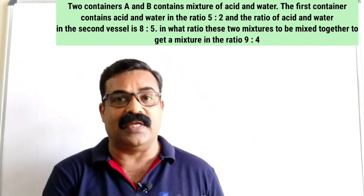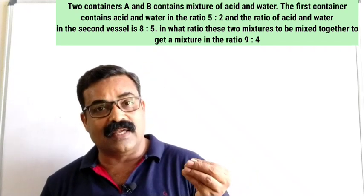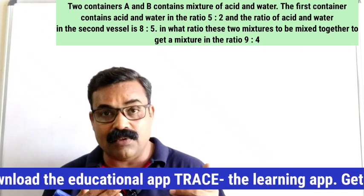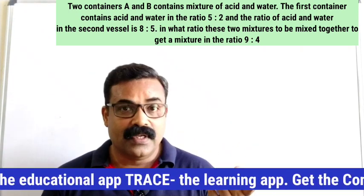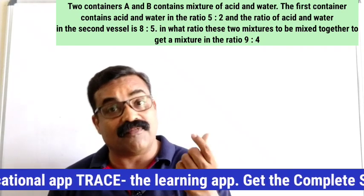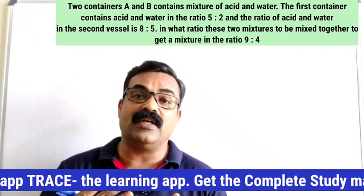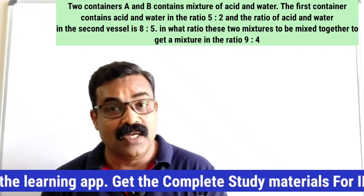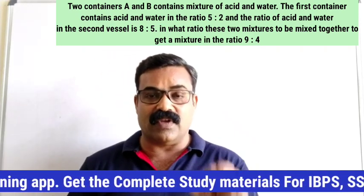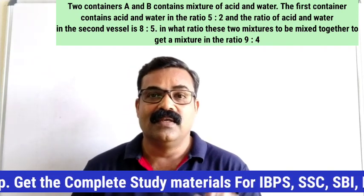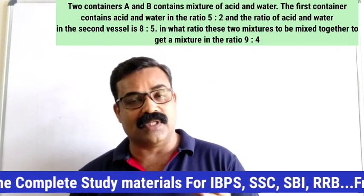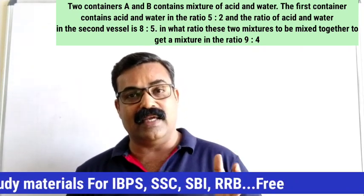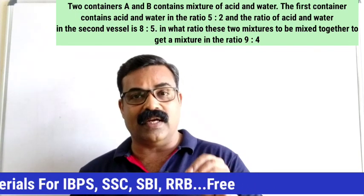This is a very important question, slightly different from questions we have already completed. Here the values are given in the form of a ratio. We have seen questions with direct values and with percentages, but here the information is given as a ratio and we need to find a new ratio. This topic — allegation and mixtures — carries a weightage of at least three to four questions in every competitive exam.